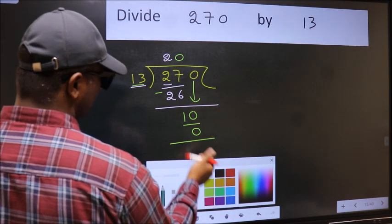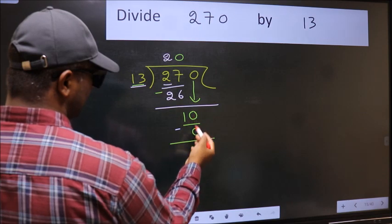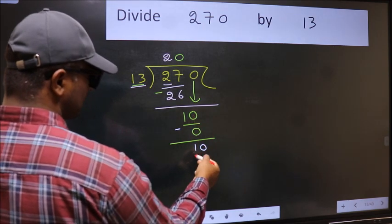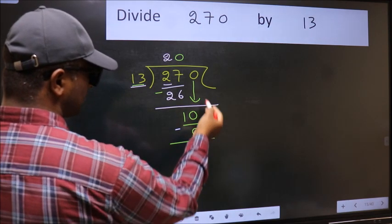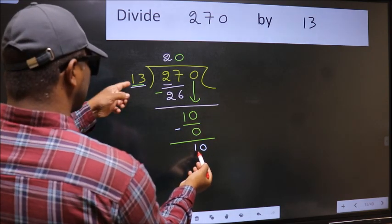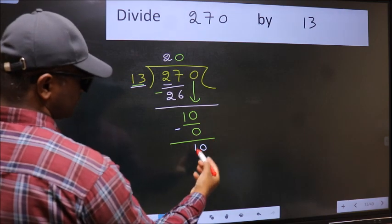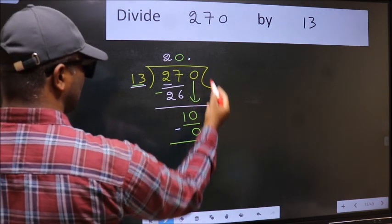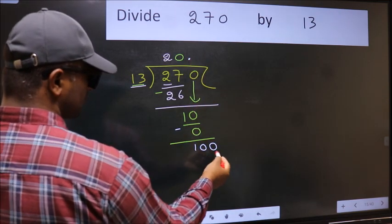Now we should subtract. 10 minus 0, 10. Over here, we did not bring any number down. And 10 is smaller than 13. So now we can put dot and take 0. So 100.